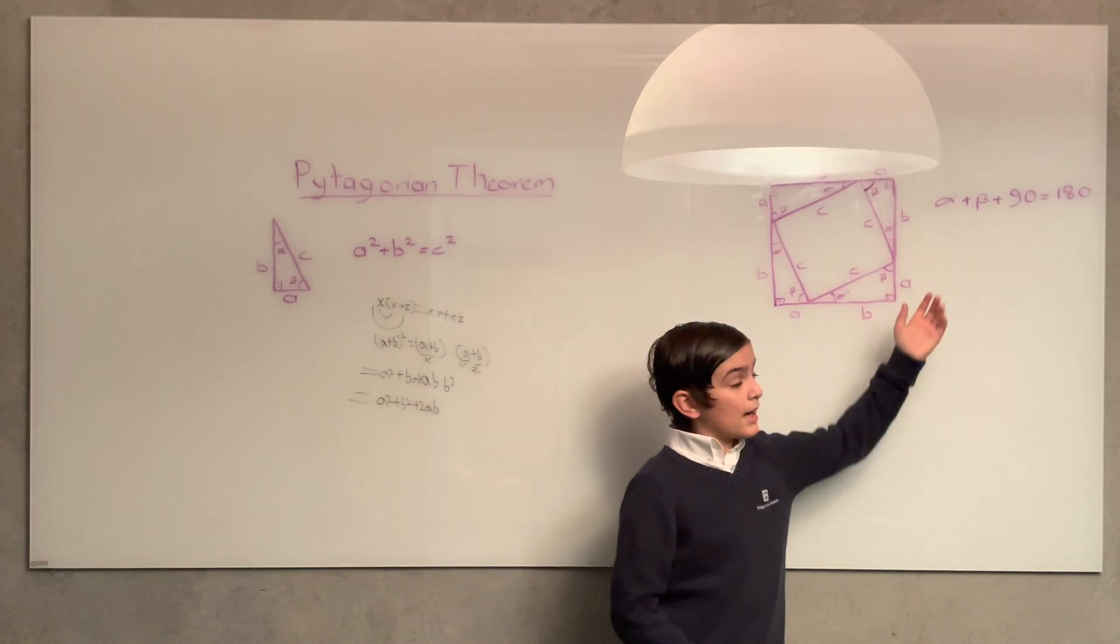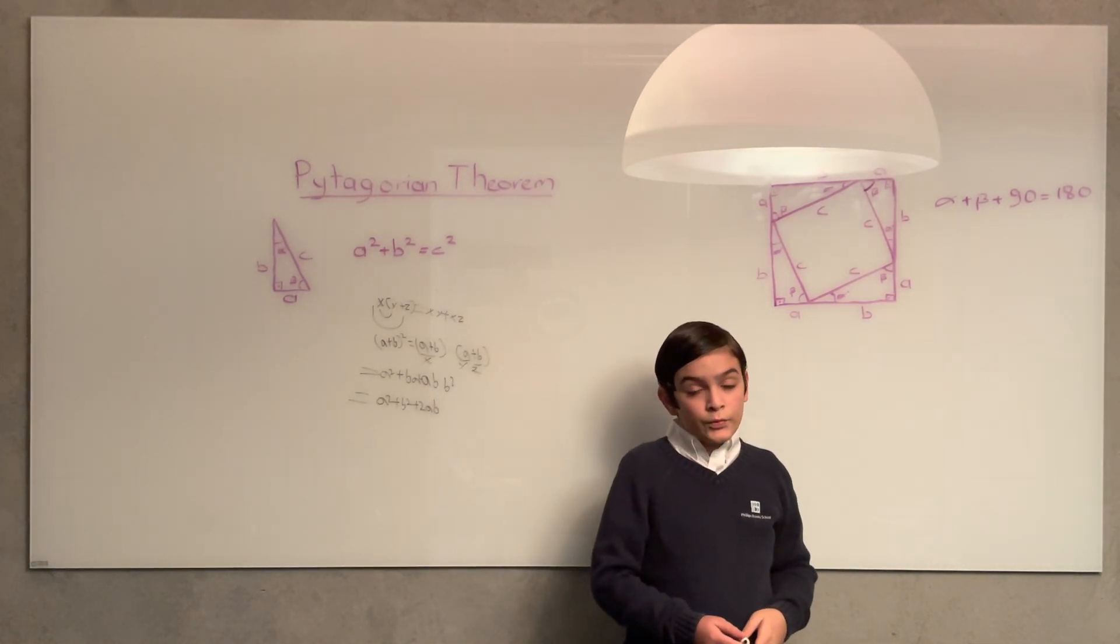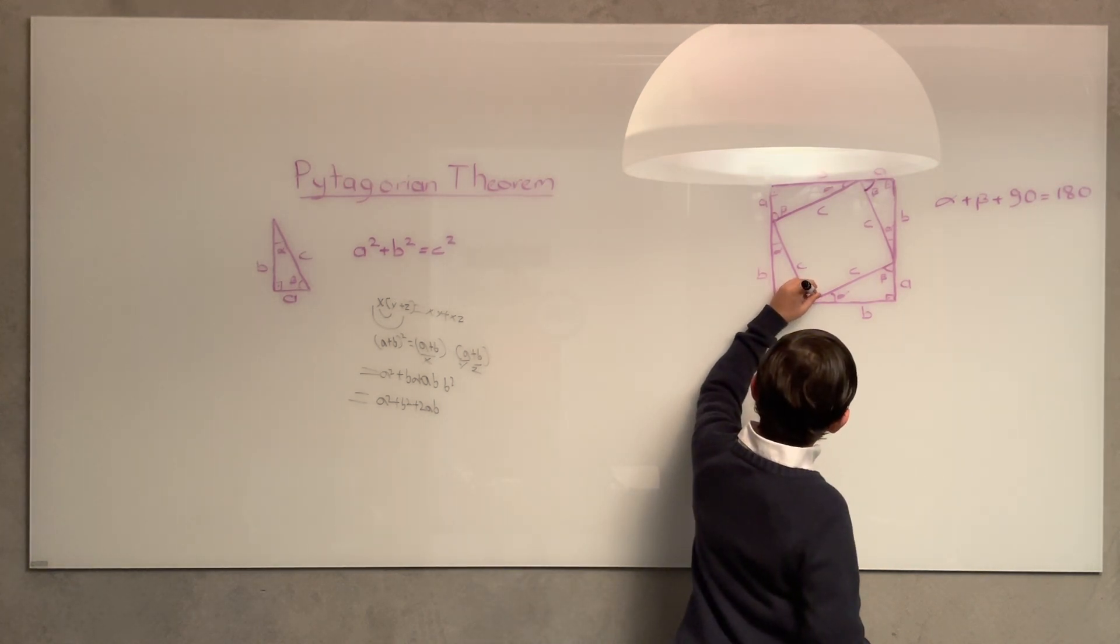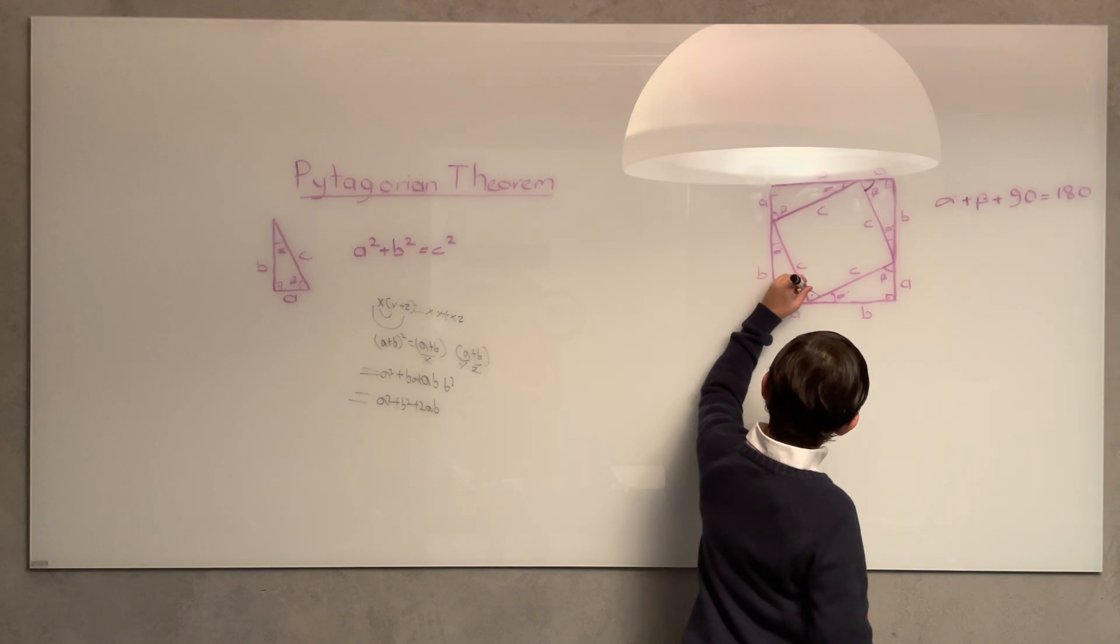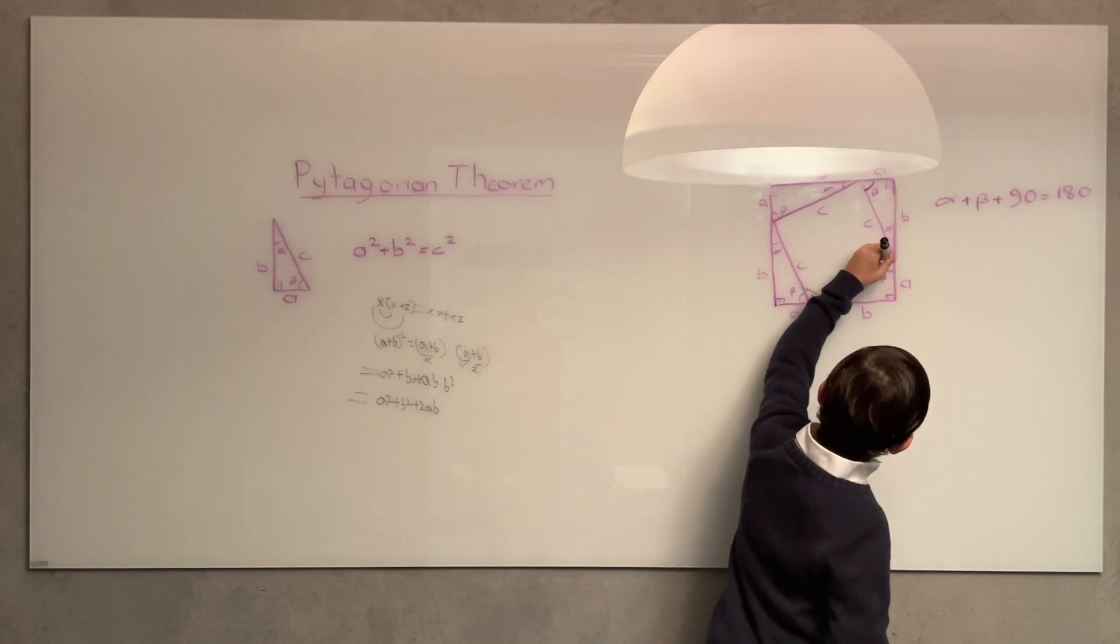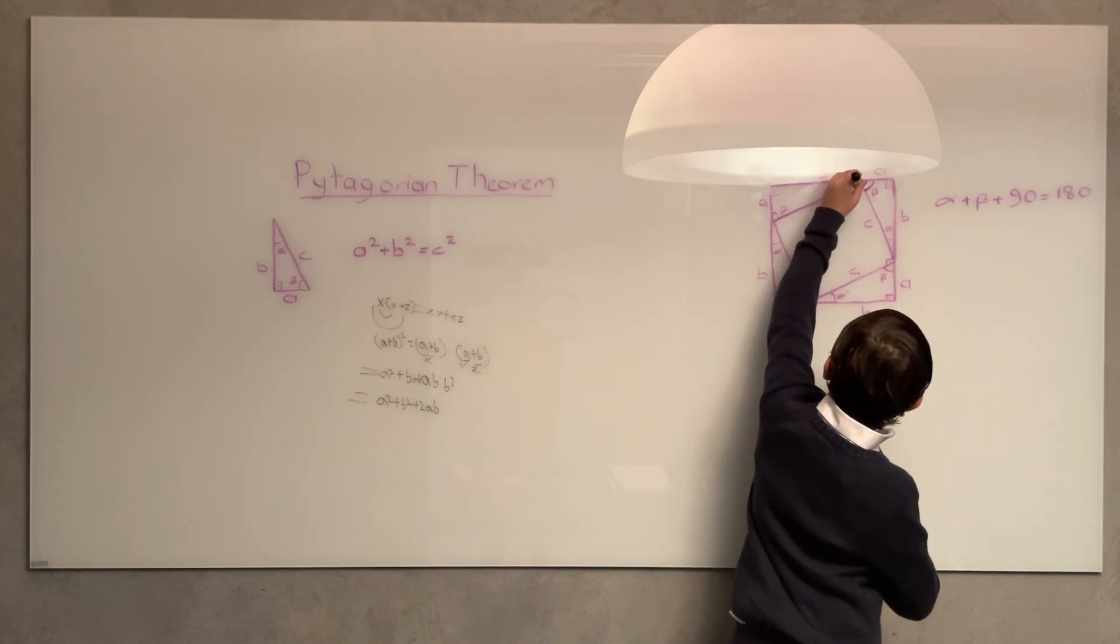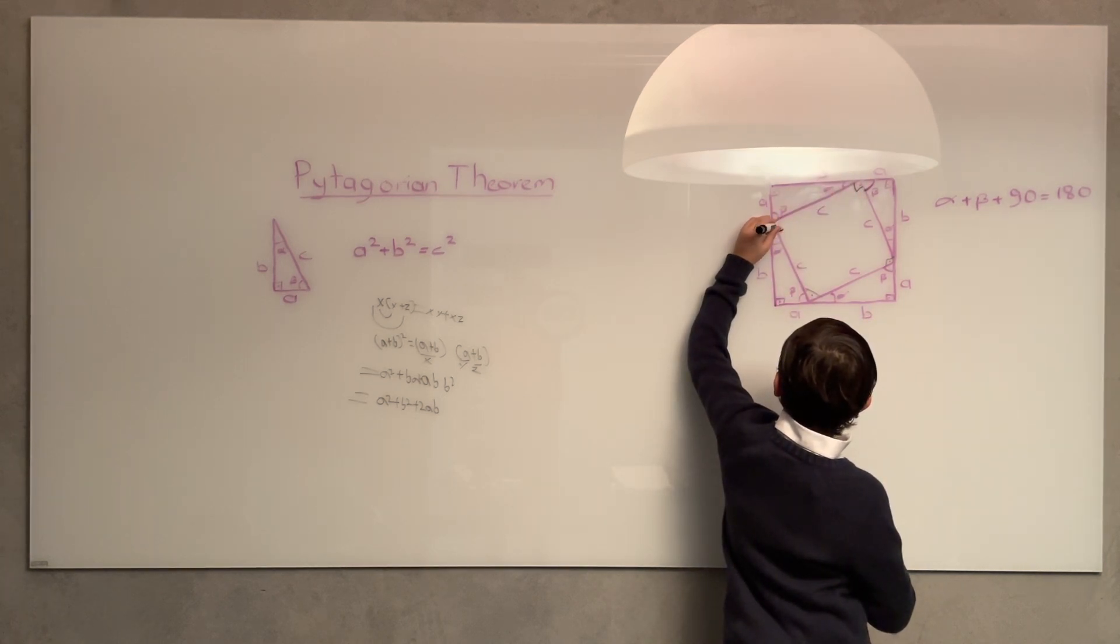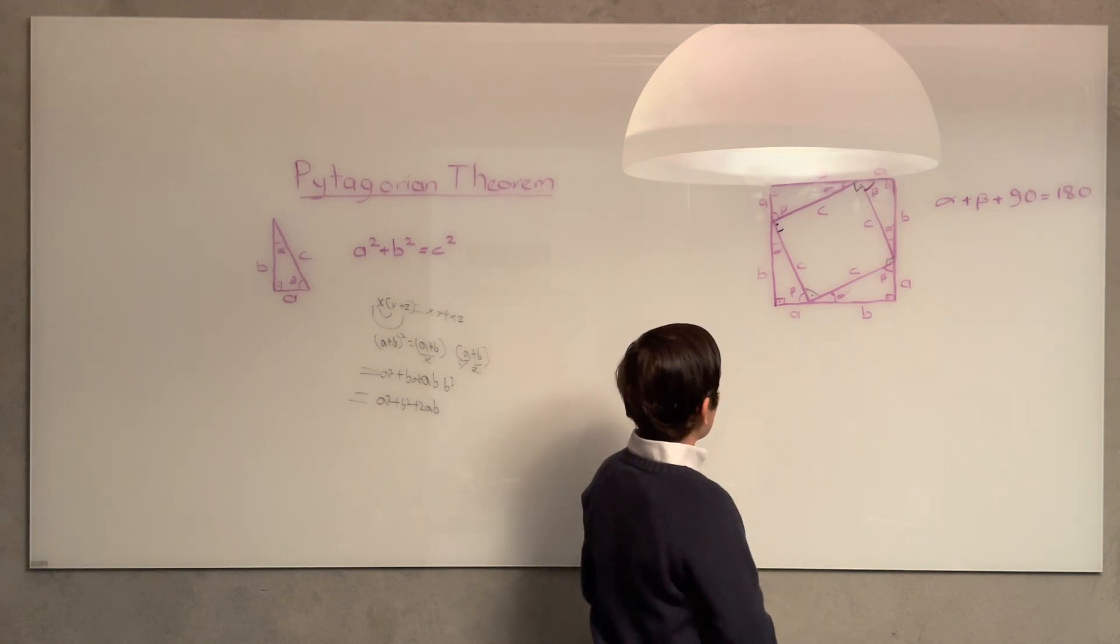Alpha plus beta plus 90 equals 180, so alpha plus beta is 90. That means right here we have 90 degrees. And since we have 90 degrees for all angles, that means inside this big square, we have a smaller square.